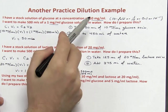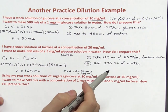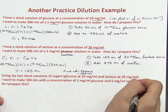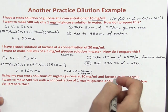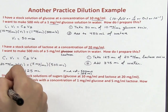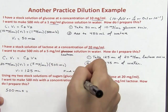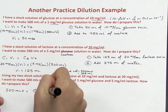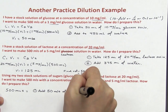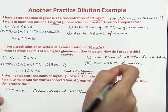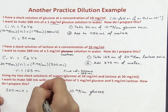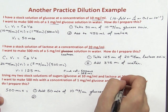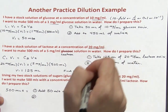Now, using my two stock solutions — glucose at 10 mg per mL and lactose at 20 mg per mL — I want to make 500 mL with a concentration of 1 mg per mL glucose and 5 mg per mL lactose. We've already done most of the work. We know that for 500 mL at these concentrations, we need to add 50 mL of the 10 mg per mL glucose. Step 2: we already know we need 125 mL of the 20 mg per mL lactose.